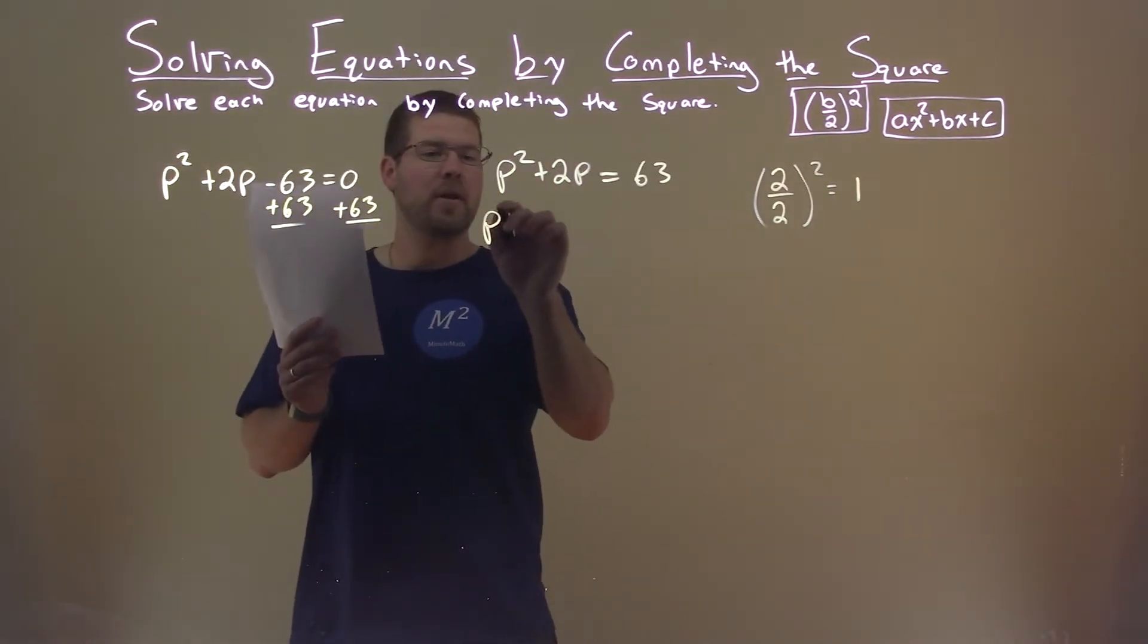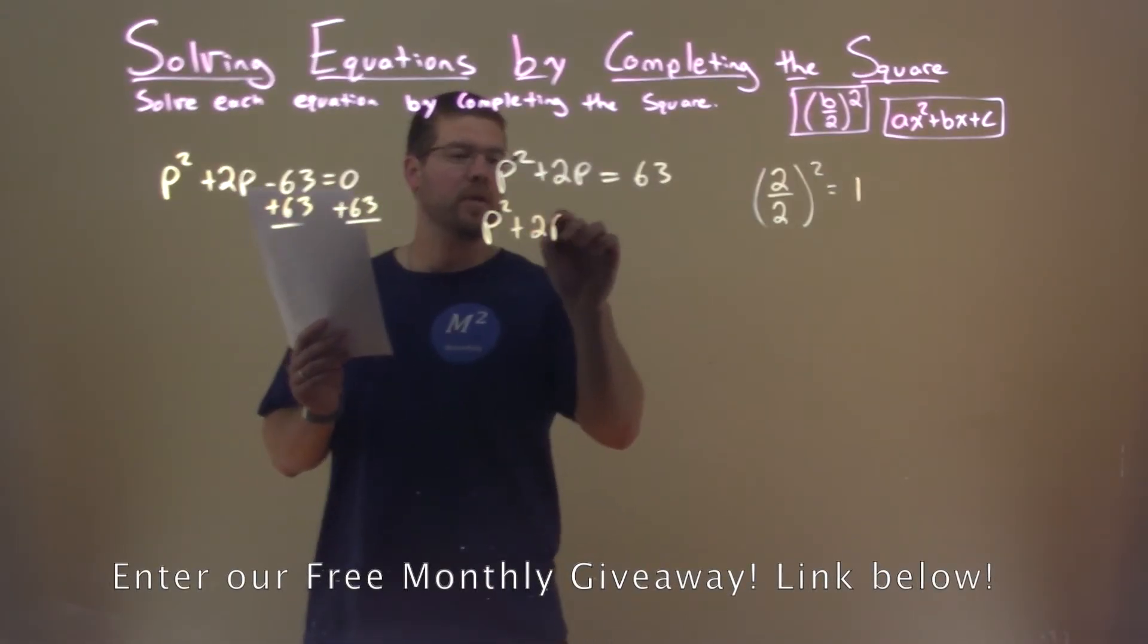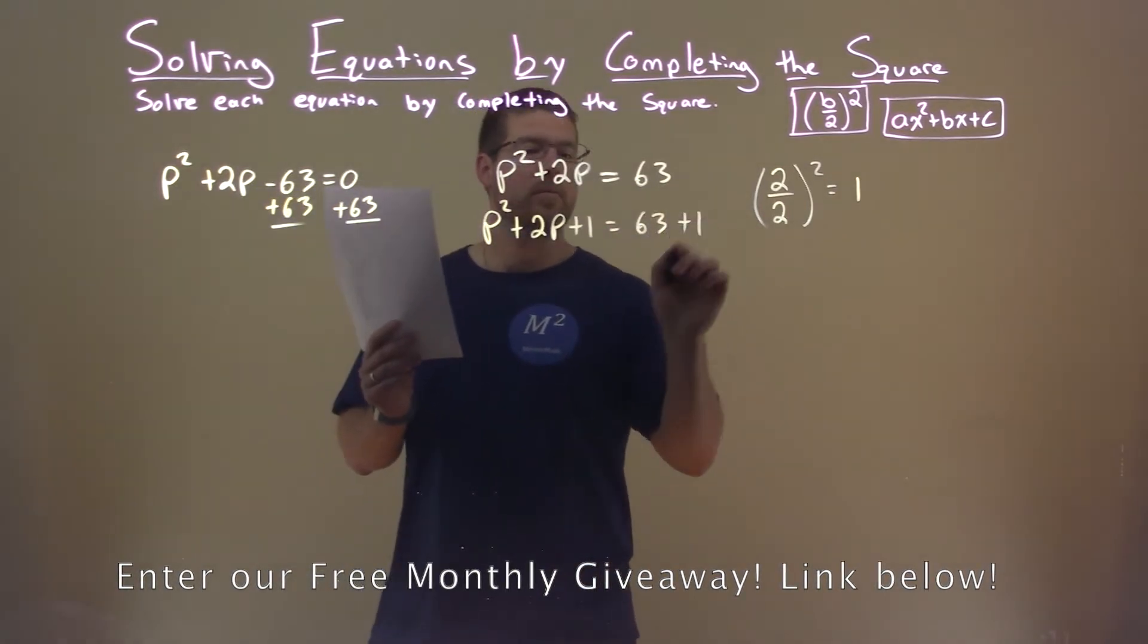So we're going to take this 1 and add it to both sides of the equation. p squared plus 2p plus 1 equals 63 plus 1.